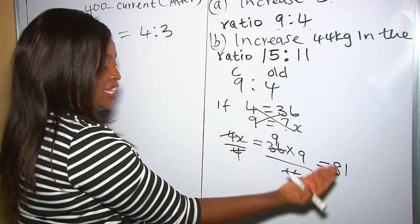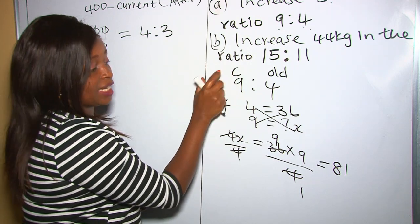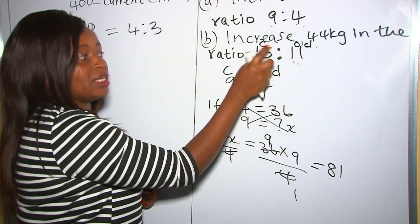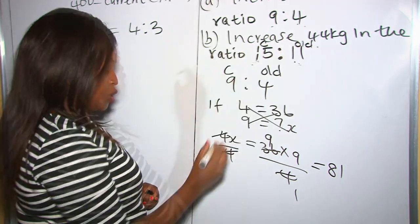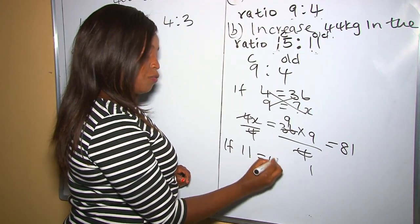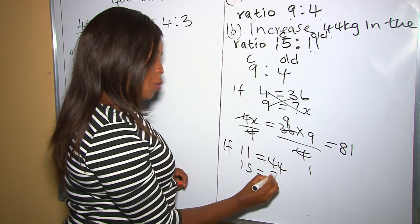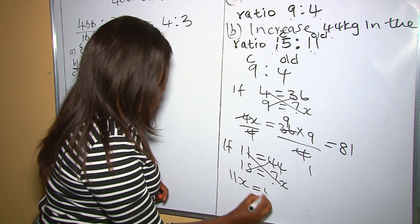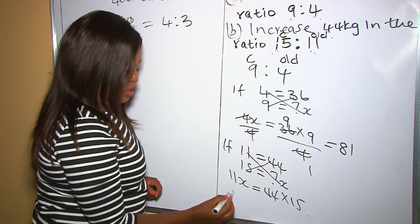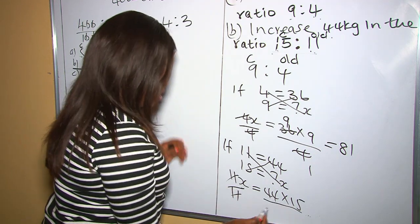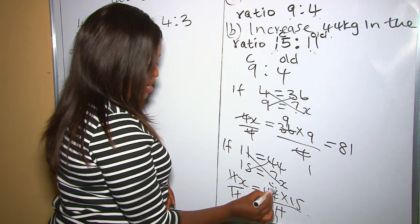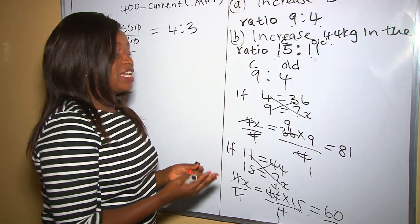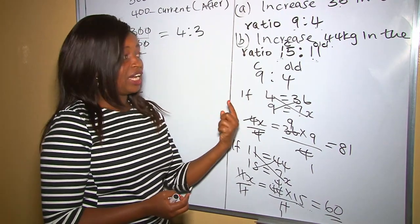Let's work out part B: increase 44 kg in the ratio 15 is to 11. Looking at the ratio, 15 is the current and 11 is the original old value. So if 11 equals 44, what does the current value equal? That is our x. We cross multiply: 11x equals 44 times 15. Dividing both sides by 11, we get x equals 4 times 15, which is 60. Therefore our new mass after increasing according to this ratio is 60 kg — it increased from 44 to 60.